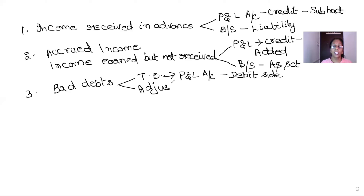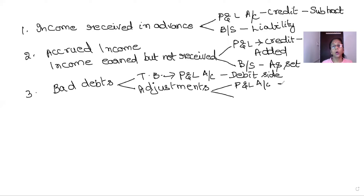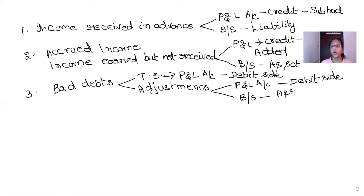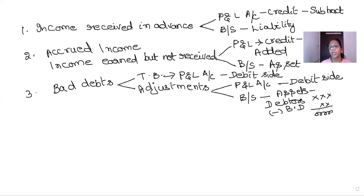When bad debts are given in the adjustments — usually indicated by the word 'further' — it means additional bad debts incurred near year-end. This appears at two places: it is taken to the debit side of the P&L account, and you can add both trial balance and adjustment bad debts together. Additionally, the bad debts mentioned in the adjustments must also be reflected in the balance sheet by subtracting from the debtors' value on the asset side.